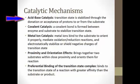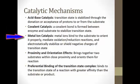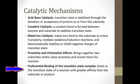There are a number of catalytic mechanisms that an enzyme can employ, and often enzymes utilize more than one. In acid-base catalysis, we have a transition state that is stabilized through the donation or acceptance of protons to or from the substrate. In covalent catalysis, a covalent bond is formed between the enzyme and the substrate to stabilize the transition state. In metal ion catalysis, metal ions are used to bind to the substrate to orient it properly, mediating oxidation-reduction reactions and electrostatically stabilizing or shielding negative charges on the transition state. Proximity and orientation effects bring two substrates within close proximity and orient them for the reaction, which is specifically helpful when substrates in the cell are at very low concentration. Preferential binding of the transition state complex allows the enzyme to bind the transition state with greater affinity than that of the substrate or the product.